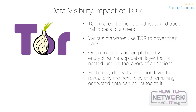Each relay decrypts the onion layer to reveal only the next relay so that the remaining encrypted data can be routed to it. You can see the Tor circuit when the user accesses cisco.com from the Tor browser — it went first to a host in the Netherlands, then to hosts in Sweden and France, and finally to cisco.com.